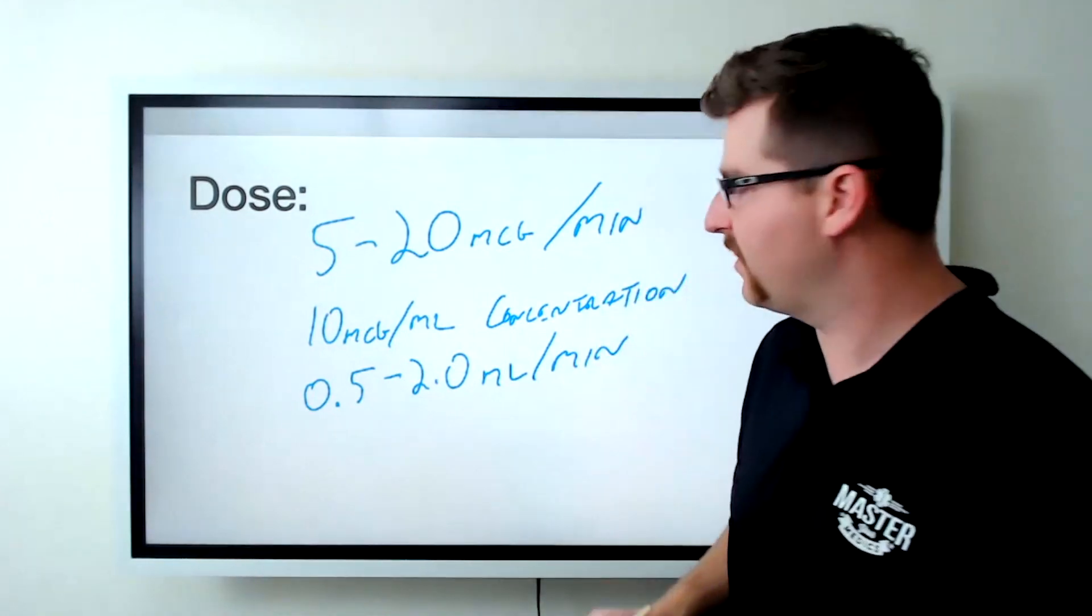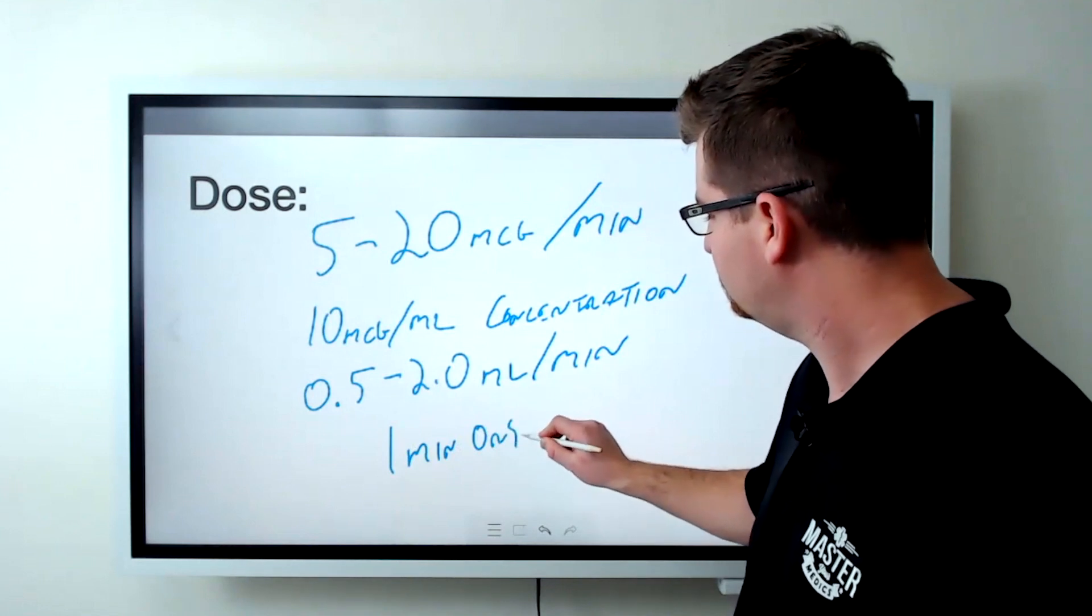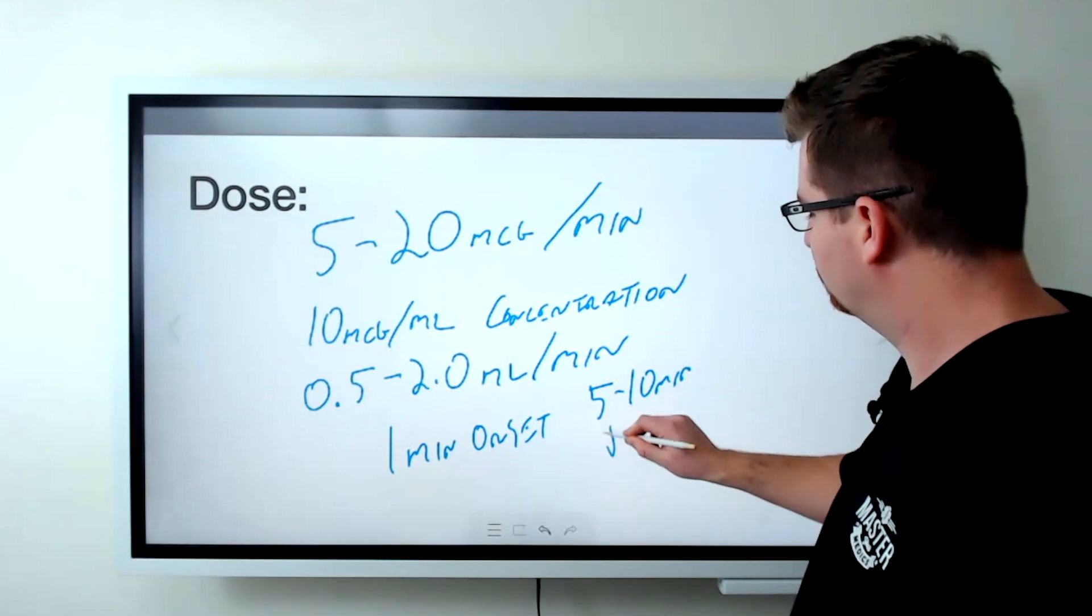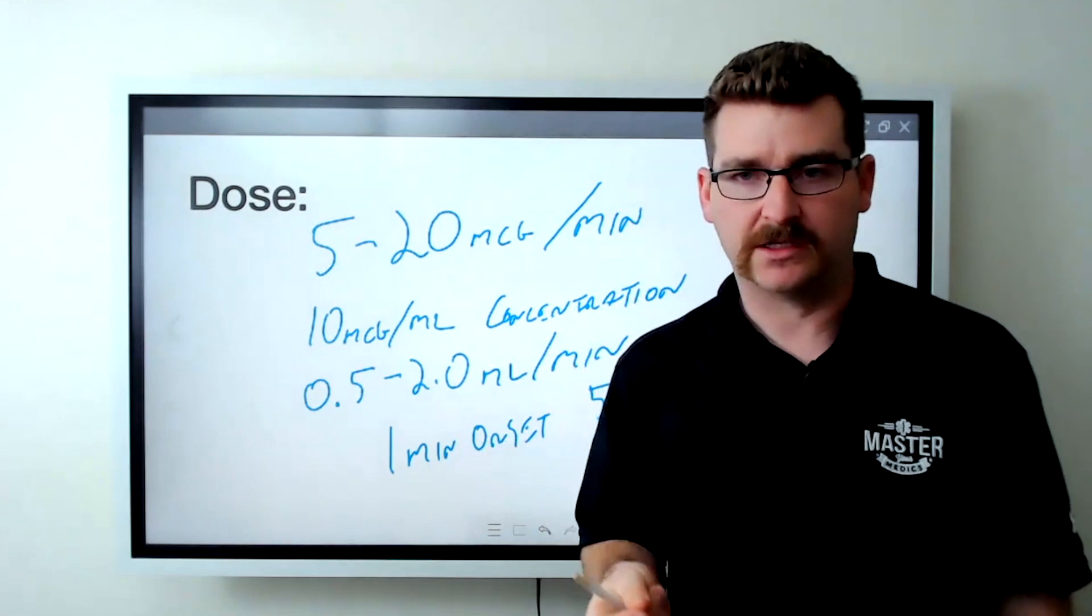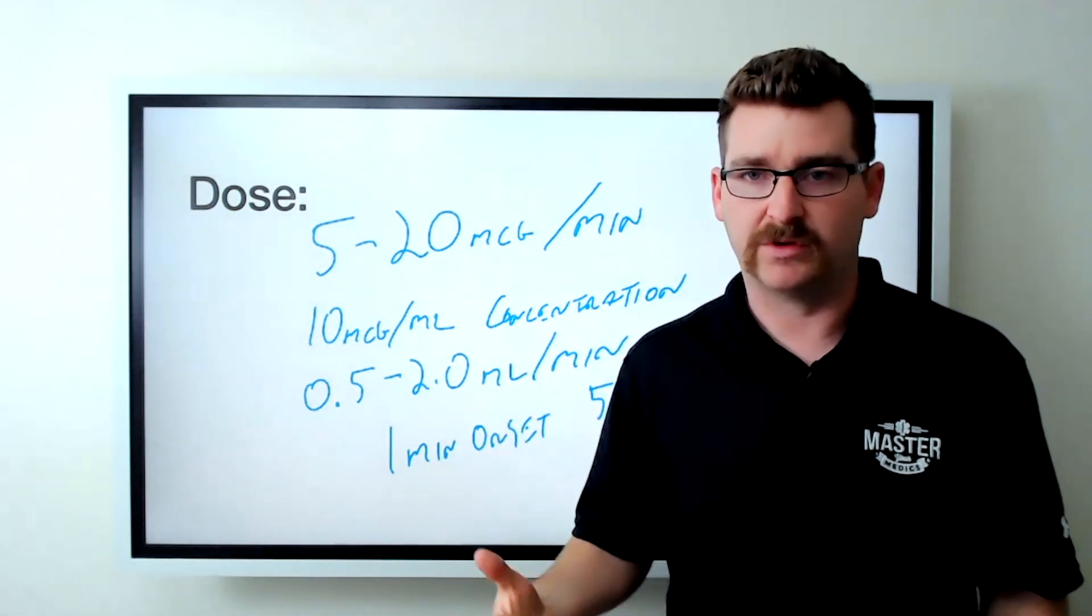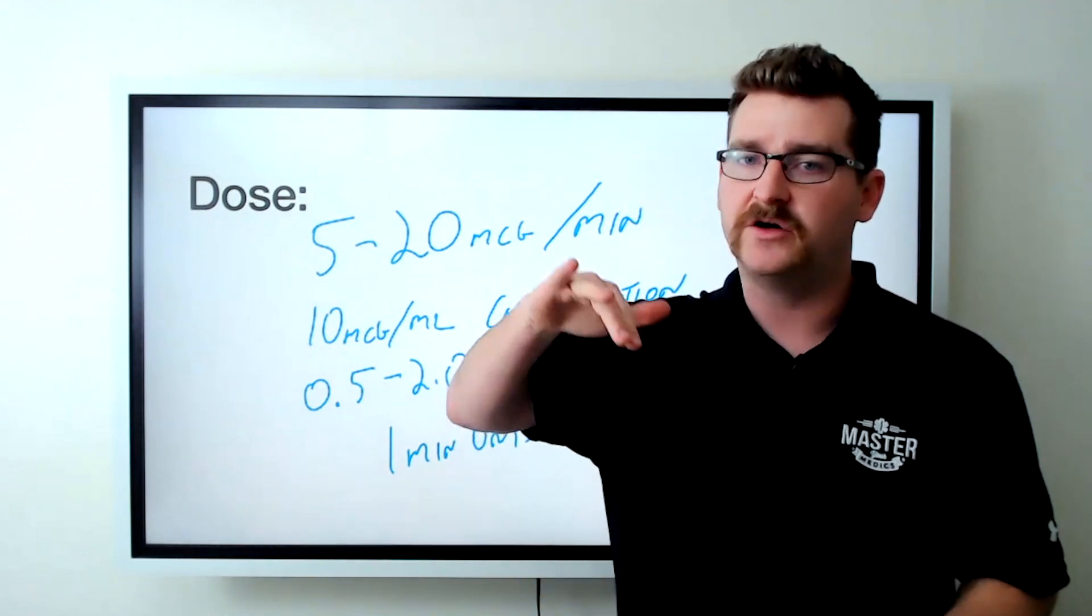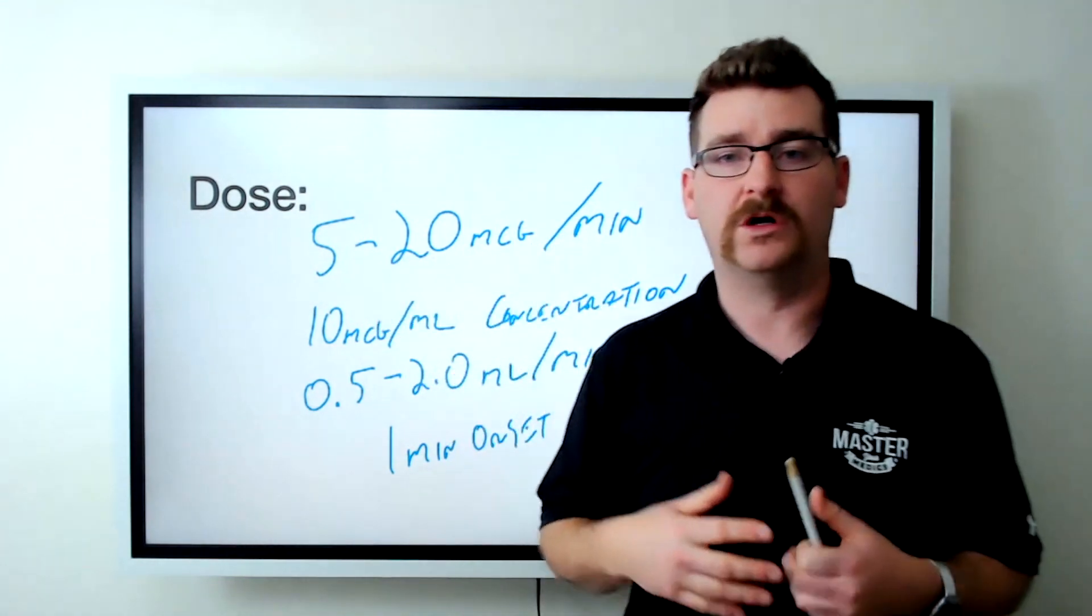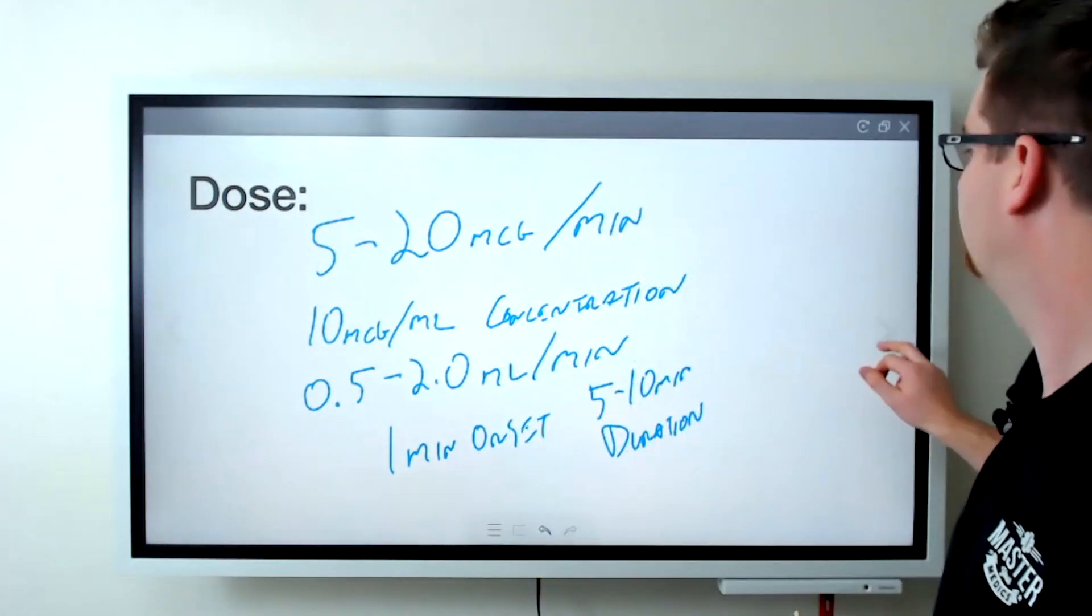Now let's talk about a little bit of the mechanisms of action. We have a one minute onset and then five to 10 minute duration. So quick on. We're going to be able to see if our epinephrine is doing good for us. Just set your blood pressure cuff to continue to go off every single minute, every two minutes, and just monitor as you're going up. And that way you know how much more to be giving. Very easy, very easy to work with.